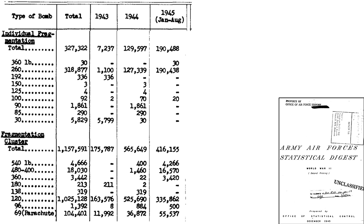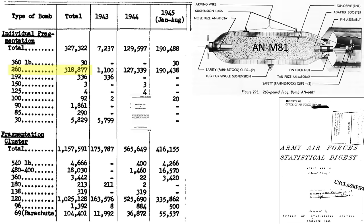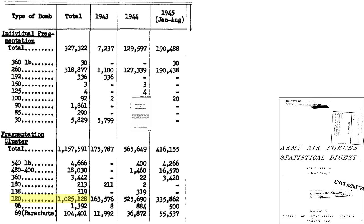This table lists the number of fragmentation bombs and clusters dropped in World War II by weight class. The most popular non-cluster fragmentation bomb adopted was the 260-pound M81 fragmentation bomb, representing 97 percent of all non-cluster fragmentation bombs dropped. The 120-pound class cluster type fragmentation bomb is the most common type, representing 89 percent of all fragmentation cluster bombs dropped.